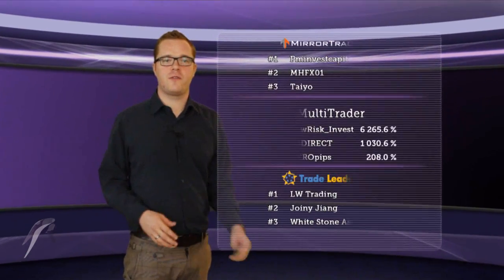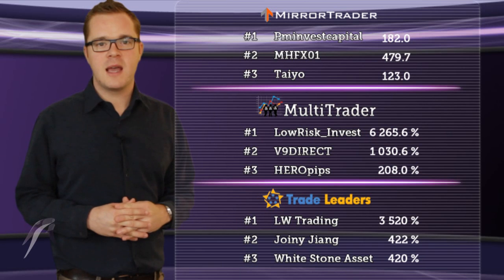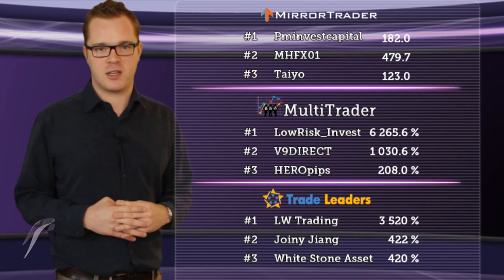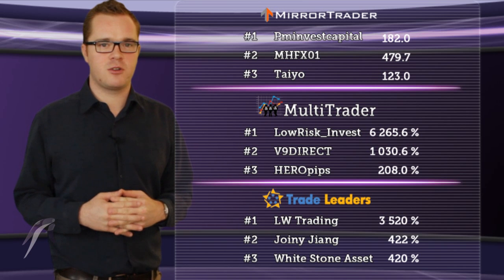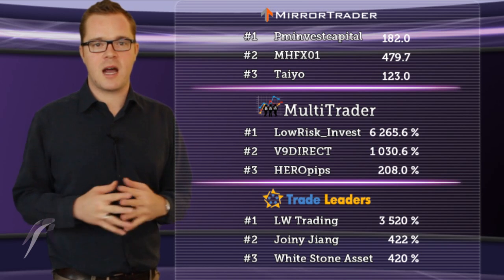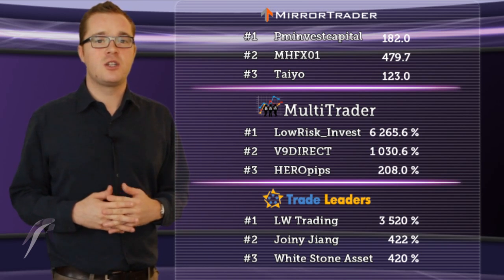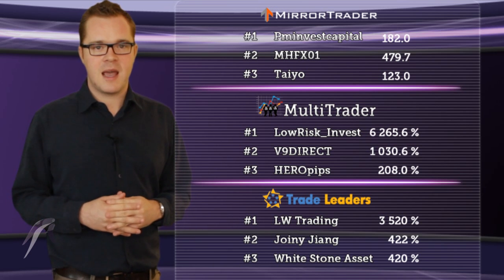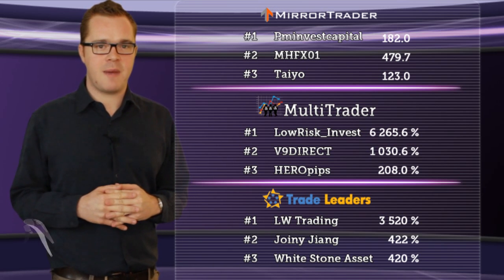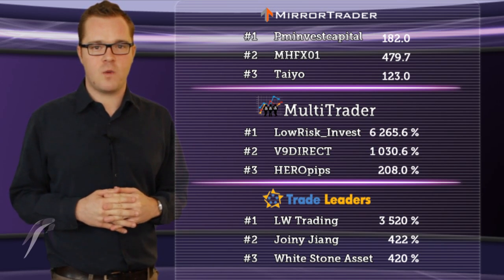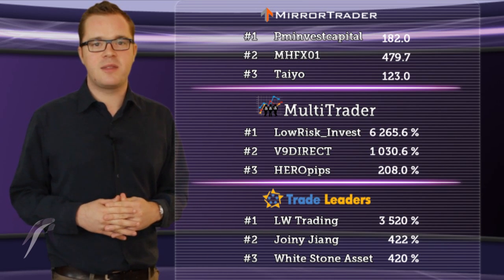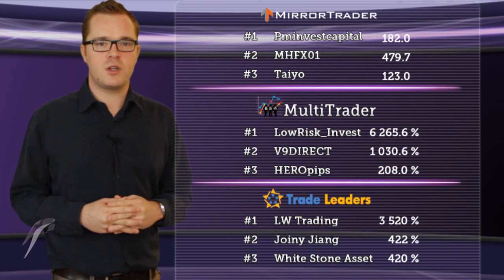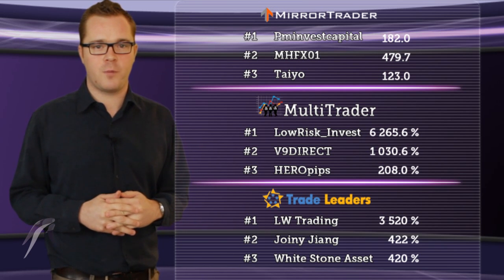Before we finish, Axury brings you a short overview of the best traders on Axury, giving you the opportunity to join their strategies. PM Invest Capital still remains first on the mirror trader platform, despite falling 130.4 pips to 182 pips. In second place again is the MHFX01 strategy with 479.7 pips, and third remaining is TIO strategy, which fell only 63.4 pips.